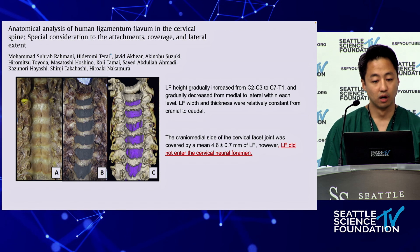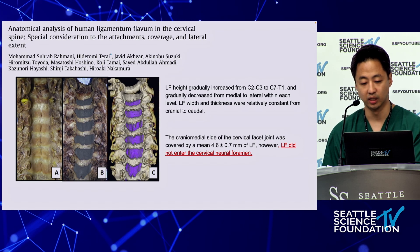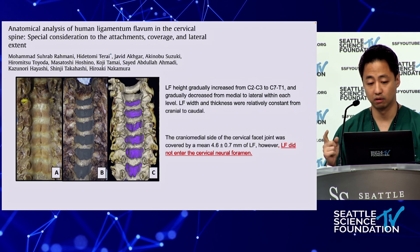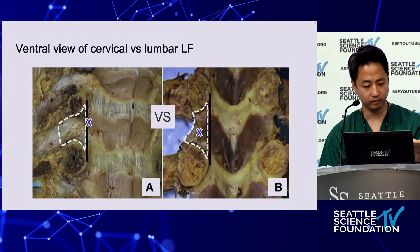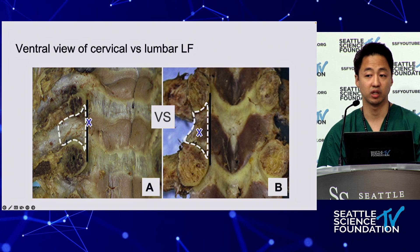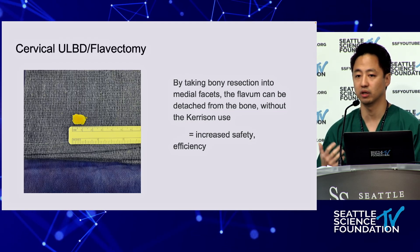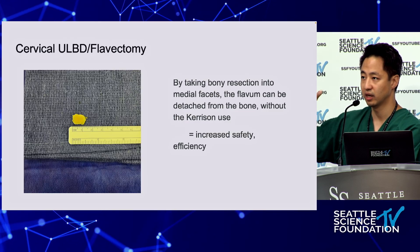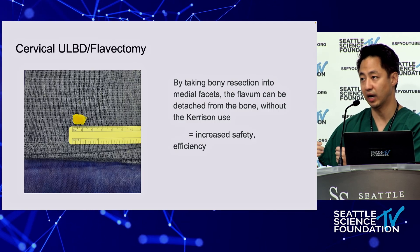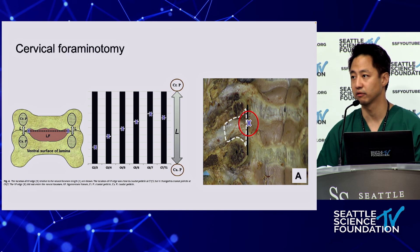Moving up to cervical spine: the ligamentum flavum width stays about the same but gets taller as you go down the spine. Importantly, the ligamentum flavum does not enter the cervical neural foramen — and that's really important. Comparing the cervical foramen to lumbar, you can see there is no ligamentum flavum in the cervical foramen. In cervical ULBD, each Kerrison bite can be dangerous because the instrument is so long. So if you maximize drilling and disconnect the ligamentum flavum laterally at the lamina-foramen junction, you can remove the flavum quite safely without using the Kerrison punch.